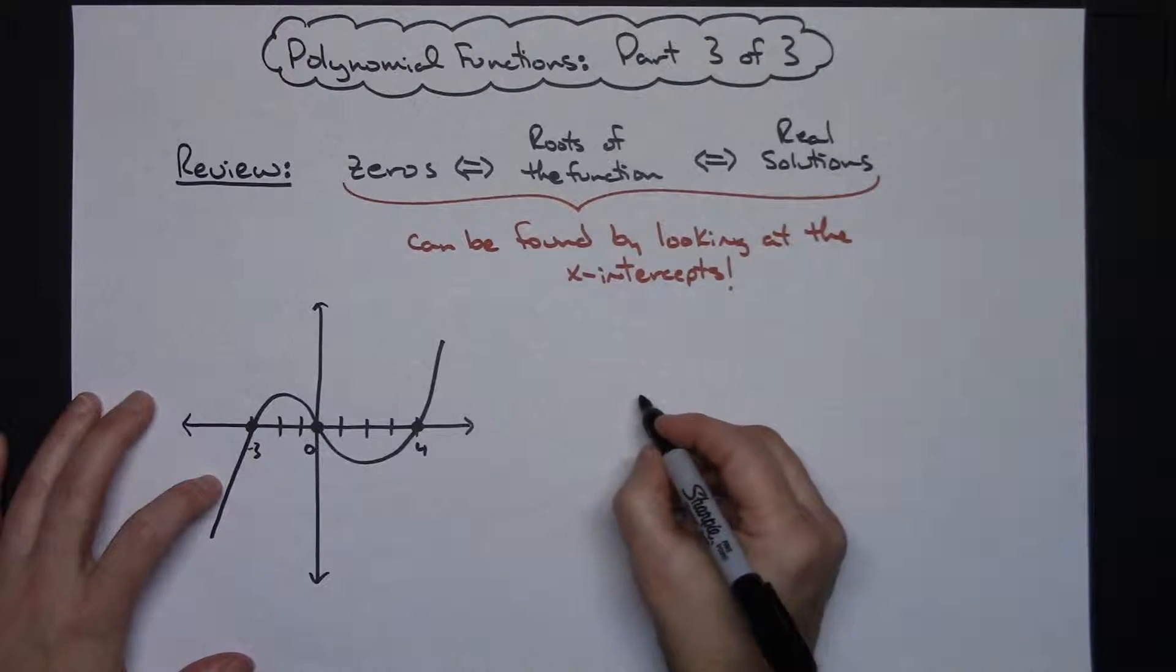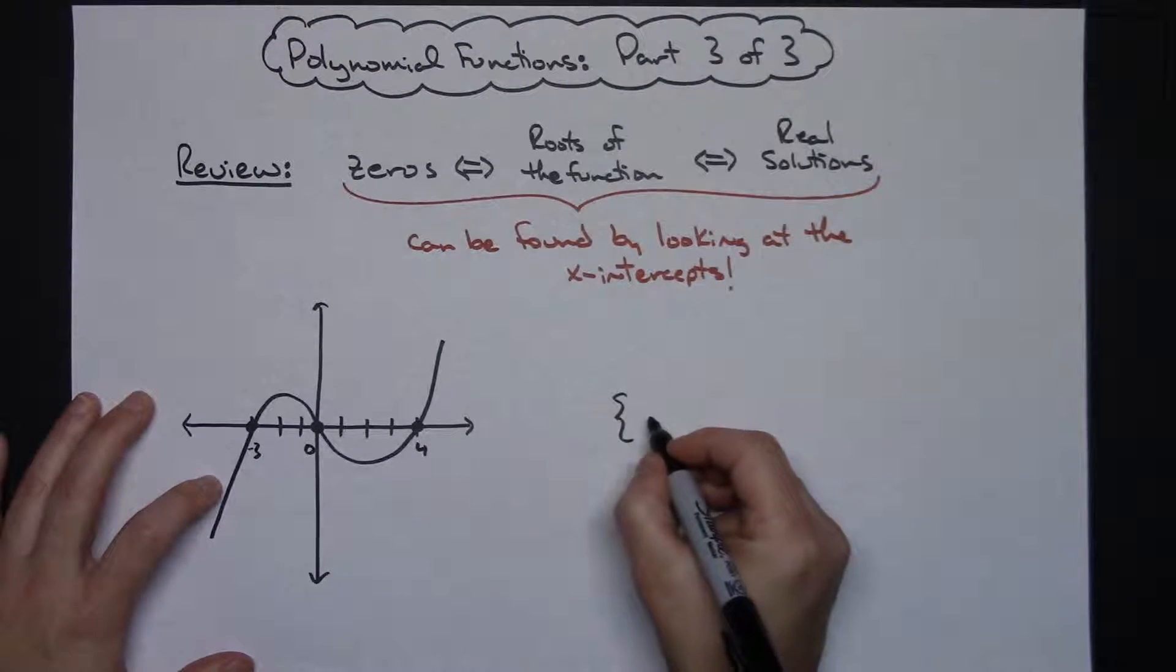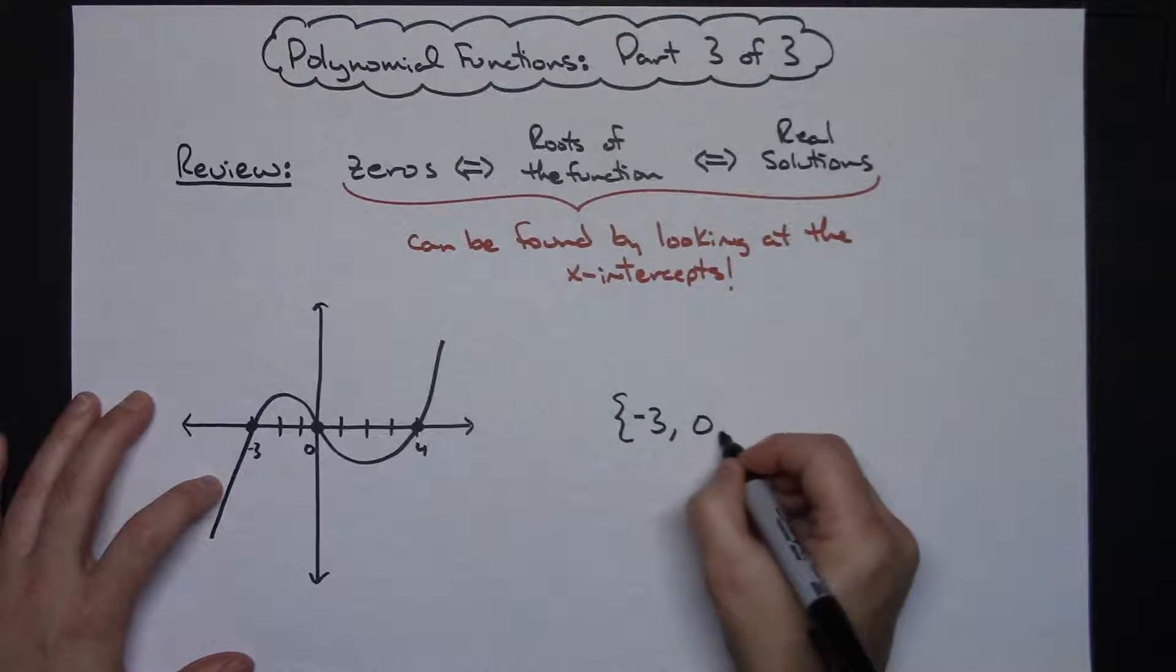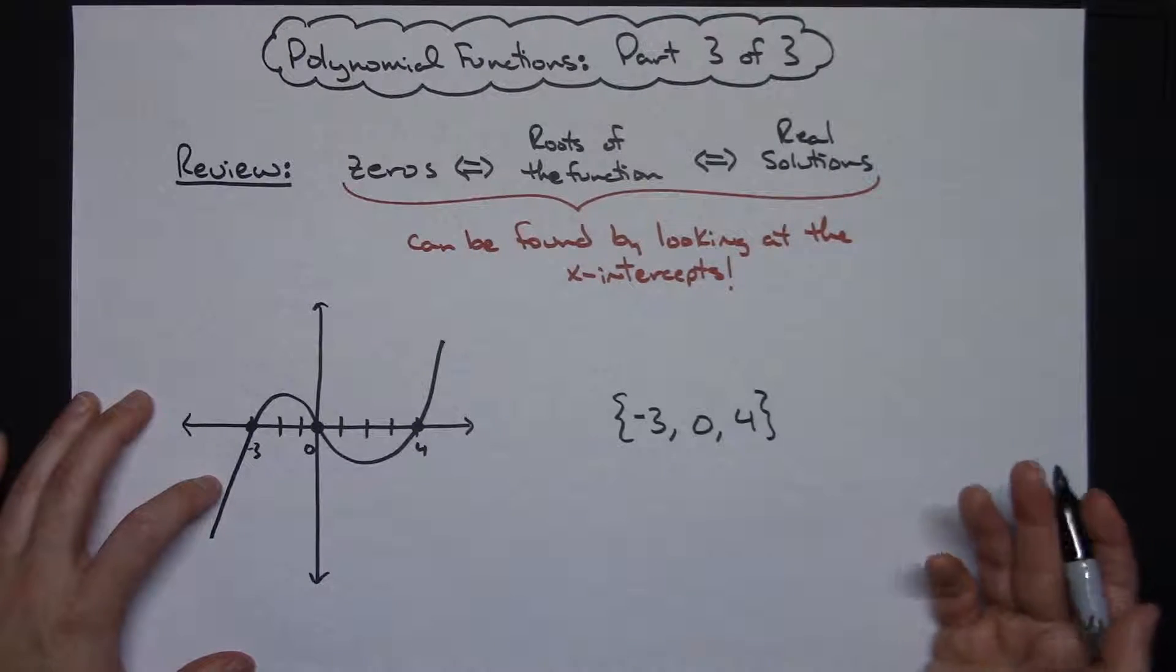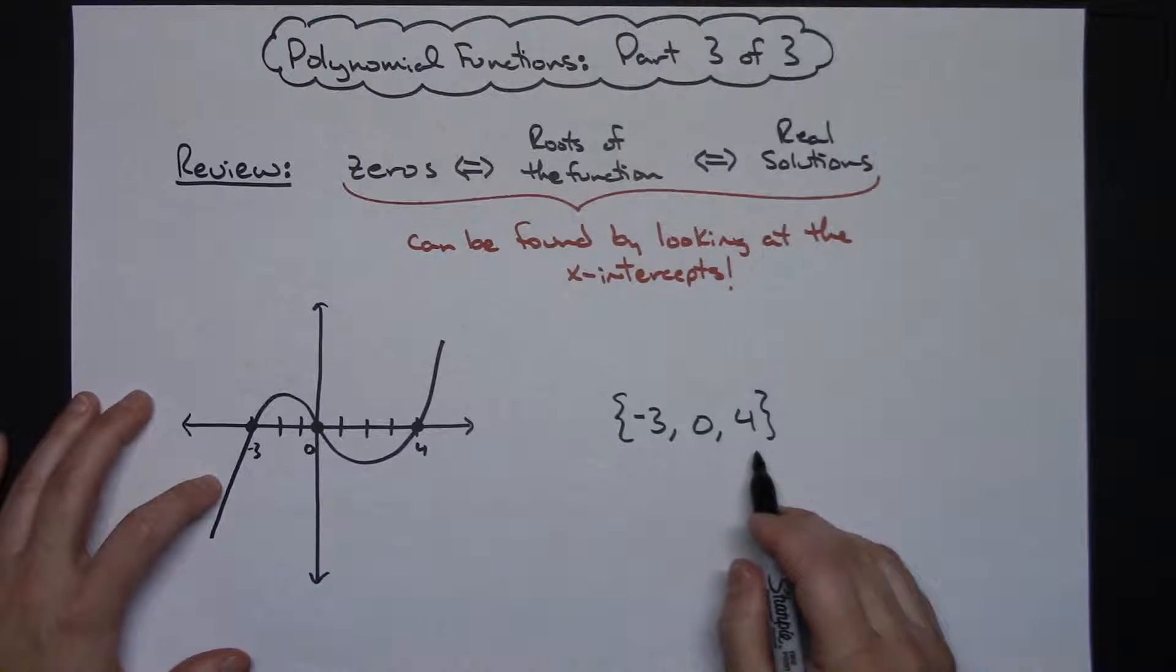So if I was going to write those, I would probably use set brackets and I would say the zeros of this polynomial function are negative three, zero, and four. If I was going to write the real solutions to this equation, since there's three of them I would probably use set notation and denote it like that.